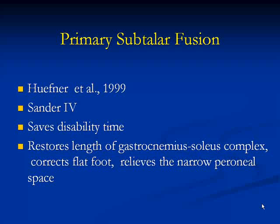There is a tendency to perform primary subtalar fusion. One author published six cases of primary subtalar fusion for Sanders Type 4 fractures in 1992, claiming it saves disability time, restores gastrocnemius-soleus length, corrects flat foot, and relieves the narrow peroneal space. However, I doubt whether this is truly achievable, because with a bag of multiple fragments you cannot restore the shape of the calcaneus — you can excise the articular surface, but you will be left with a deformed calcaneus, which has significant drawbacks.